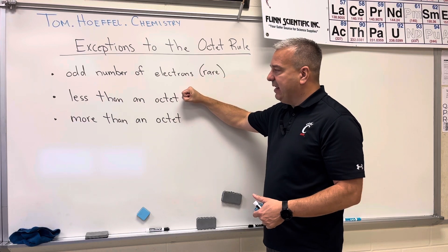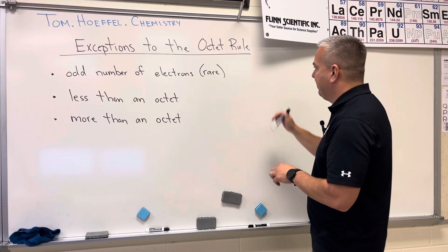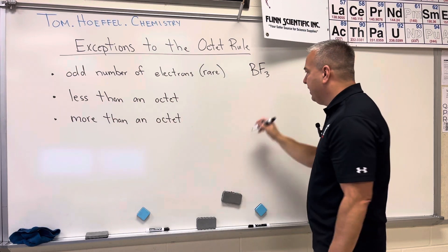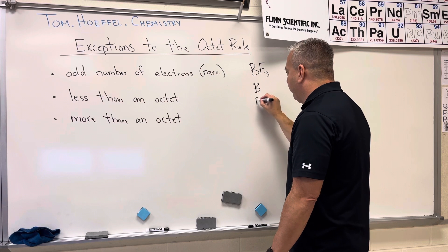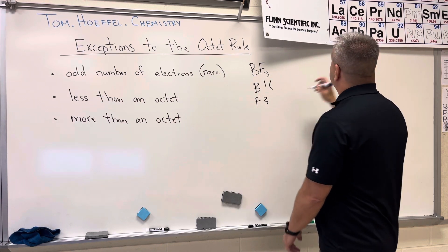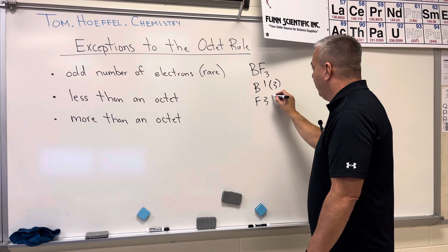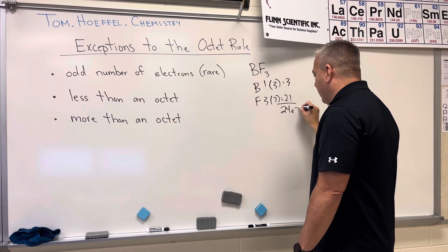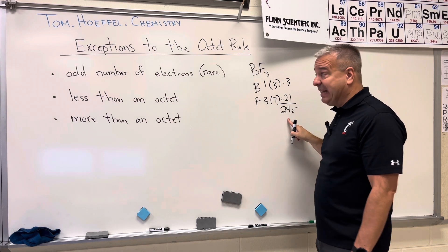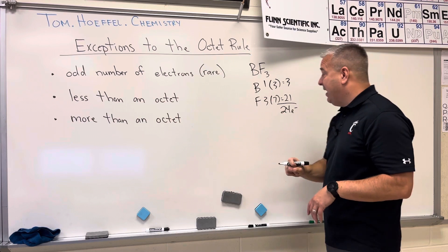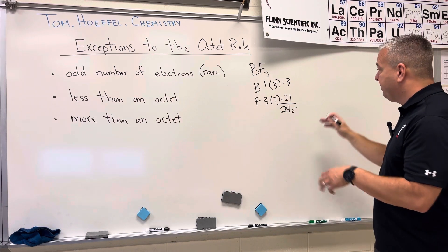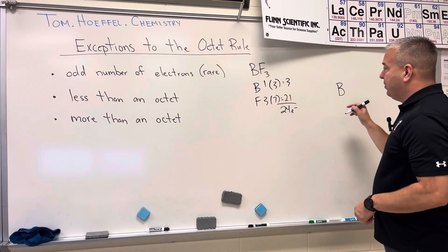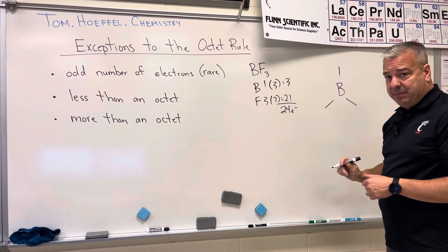Let's go right into less than an octet and look at an example. The example we're going to do is BF₃. We're going to total up the electrons — we've got boron and fluorine. Boron has three valence electrons, fluorine has seven. So we've got 21 (from fluorines) and three (from boron) for a total of 24 electrons. This is an even number, so that's great. The next thing we're going to do is attach the fluorines to the boron.